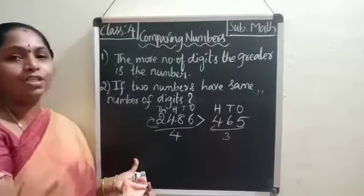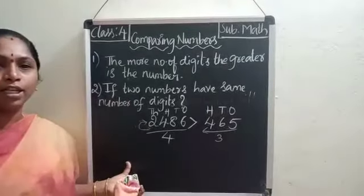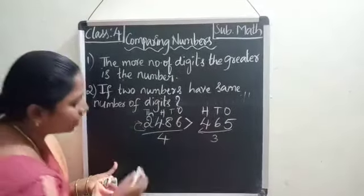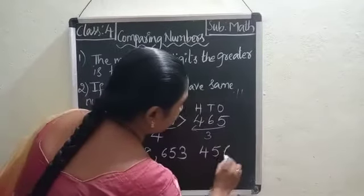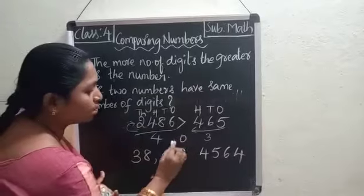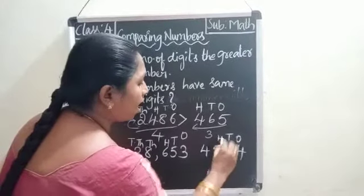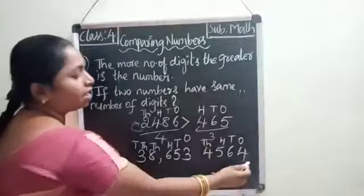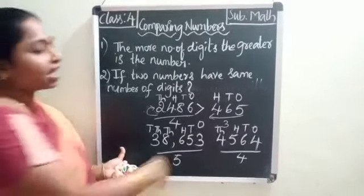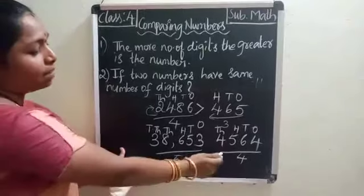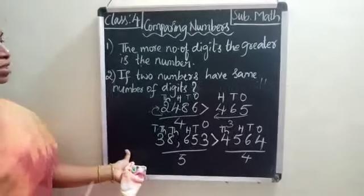By seeing the number of digits only, we can recognize which is the biggest among the given two numbers. This is the fundamental thing to remember when comparing numbers. For example, take 38,653 — ones, tens, hundreds, thousands, ten-thousands — and 4,564 — ones, tens, hundreds, thousands. You can see here the first number has five digits and the second has four digits, so we can conclude that the number with more digits is the greatest.